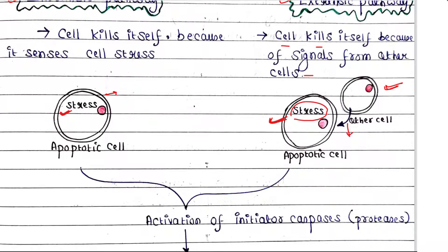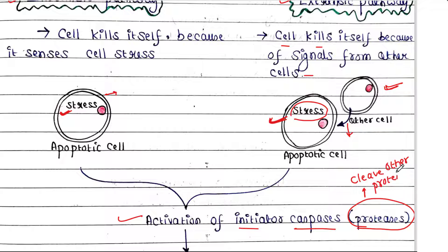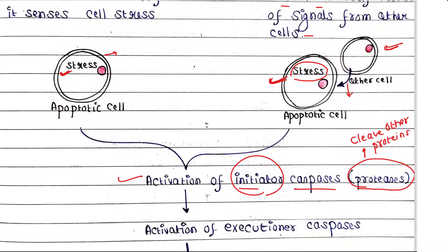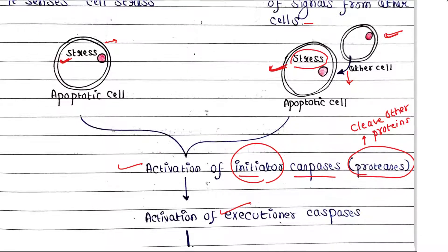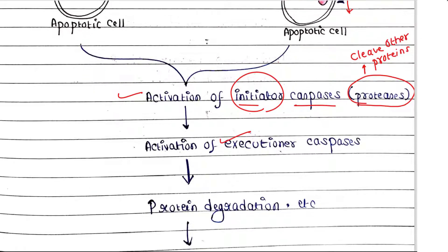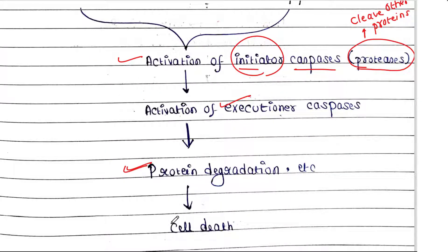Both intrinsic and extrinsic pathways ultimately activate initiator caspases. Initiator caspases are proteases — proteins that can cleave other proteins. They are called initiator caspases because they initiate the degradation process. These initiator caspases then activate executioner caspases, which degrade various proteins inside the cell and ultimately degrade the whole cell, completing apoptosis.